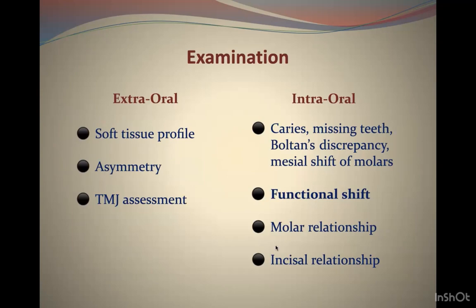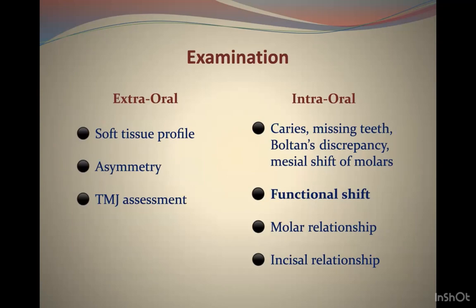In radiographic examination, we assess the intermaxillary relationship — Class 1, 2, or 3 and its severity. Then we assess the vertical relationship and mandibular plane angle. Most Class 3 cases present as high-angle. A low-angle Class 3 is easier to treat; a high-angle Class 3 is more difficult because it is already compensated.